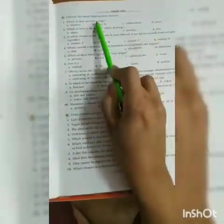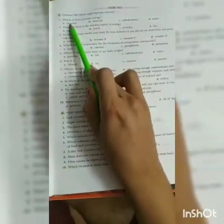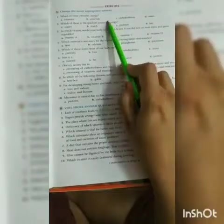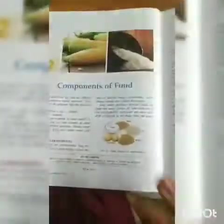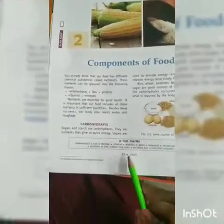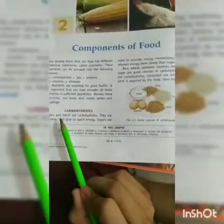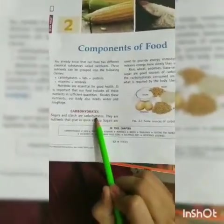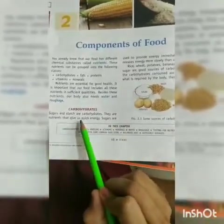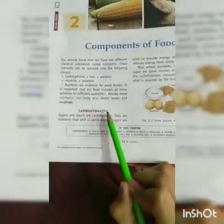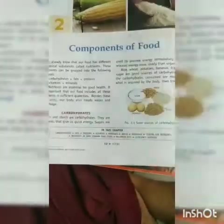Which of these four options provides us energy — vitamins, minerals, carbohydrates, or water? The answer is carbohydrates. See, students, it is written in your book on page number 12: 'Sugars and starch are carbohydrates. They are nutrients that give us quick energy.' So the answer is carbohydrates.